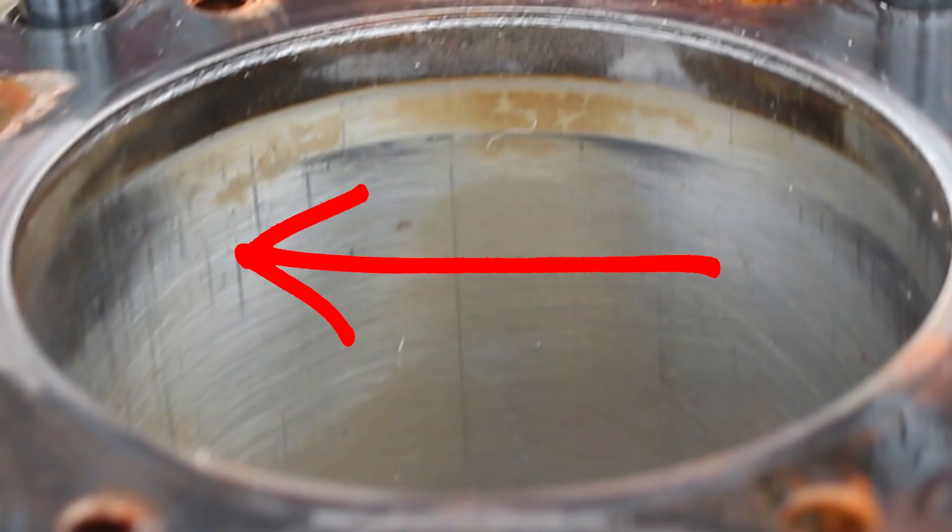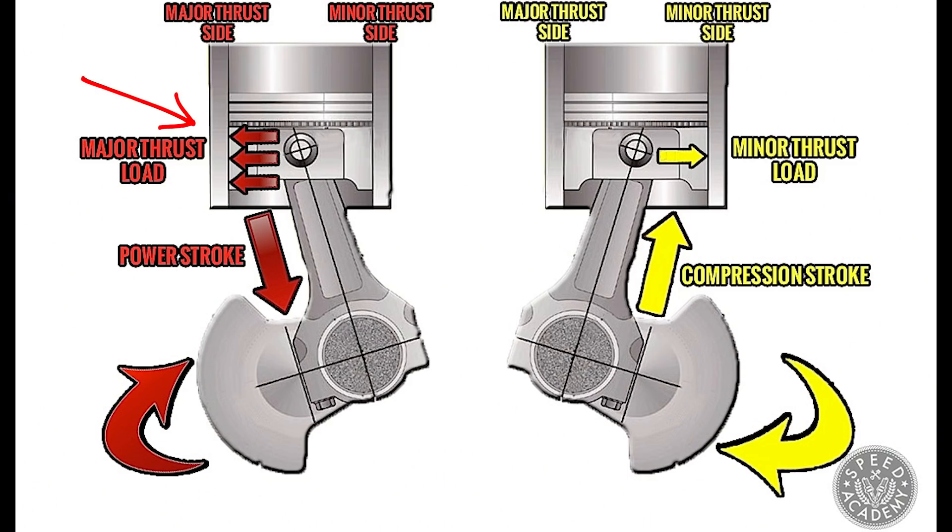And this is because this side of the engine is called the major thrust side. This cylinder wall right here gets more force put on it by the piston via what's called side loading than this side. And that's based on the direction that the crankshaft rotates on a Miata engine. When you look at it head on, it rotates clockwise, which means this side over here is going to be the major thrust side.